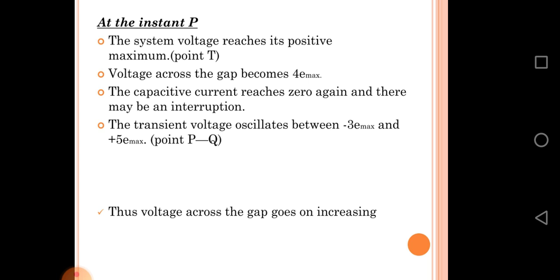From point P to Q, the voltage across the gap goes on increasing. All these points are already described in the waveform.